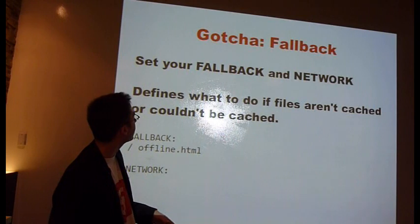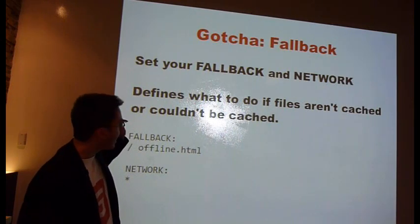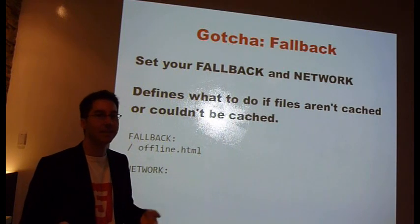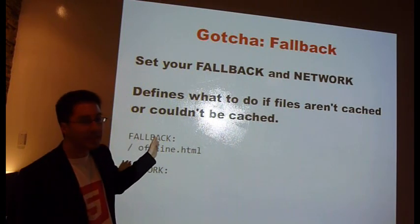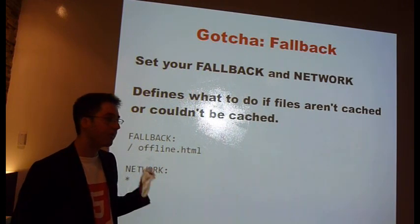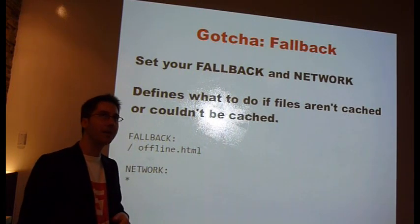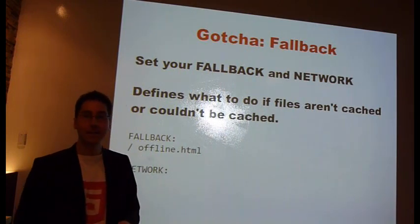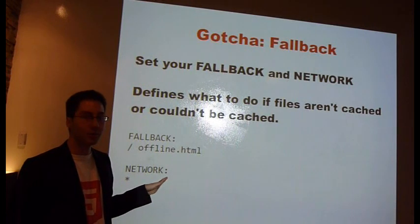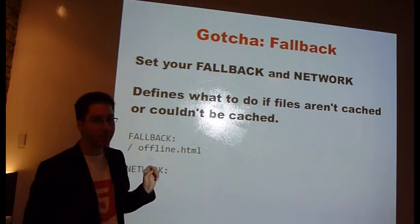The second gotcha is the fallback. The fallback defines what to use if you get a resource that is not cached or couldn't be cached for whatever reason — because sometimes the browser just randomly doesn't cache it. At least it gives it something; it'll show you an offline.html. The network section defines which files are always to be gotten from the network. That star means all. You might think it defeats all the caching — nope. Basically this is what you want for that section. I spent hours and hours trying to get these sections right to actually make something work on an iPad.